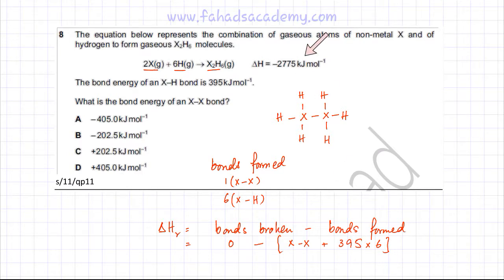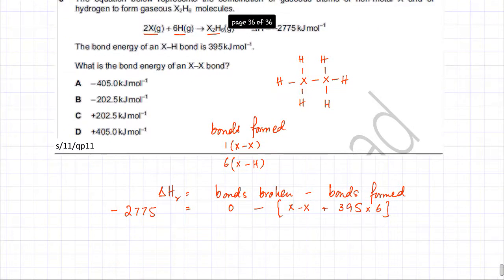So the enthalpy change of the reaction is also given, it's minus 2775. So it's given as minus 2775 kilojoules per mole. So the only unknown in the reaction is the bond energy of X-X. So we're going to make that the subject of the equation.